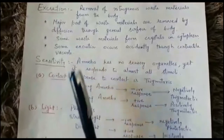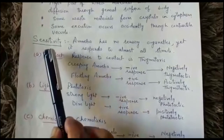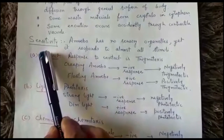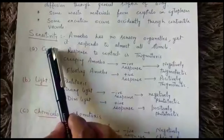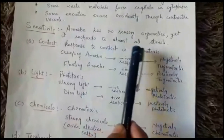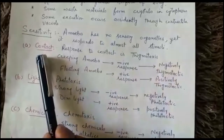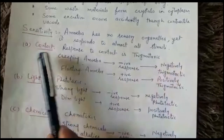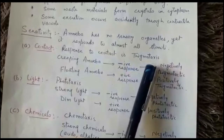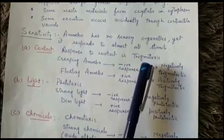This is how excretion takes place. Now, this animal is very sensitive — no doubt it has no sensory organelles, but it responds to almost all stimuli. The first is its response to contact. The response to contact is known as thigmotaxis — it is basically the orientation response of the animal to contact.